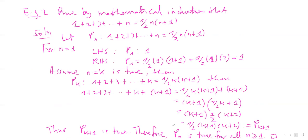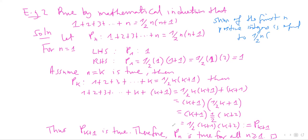Another example is to prove by mathematical induction that 1 plus 2 plus 3 plus ... plus n equals half of n times (n plus 1). This says that the sum of the first n positive integers equals n(n+1)/2. The assertion pn is: 1 plus 2 plus 3 plus ... plus n equals n(n+1)/2.